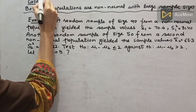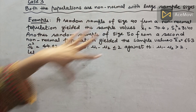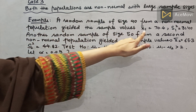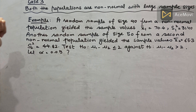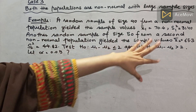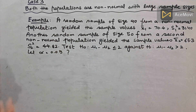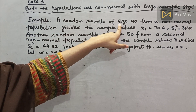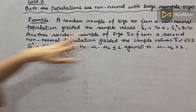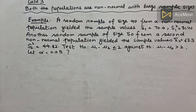Case 3: both populations are non-normal with large sample sizes. The example: a random sample of size 40 from an unknown non-normal population yielded x-bar1 equals 70.4 and s1-squared equals 31.40. Another random sample of size 50 from a second non-normal population was also taken. Since n1 equals 40 and n2 equals 50, both are greater than 30, this satisfies the large sample size condition. The procedure is the same as before.